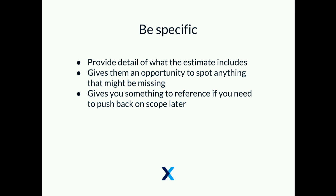The next principle I try to follow is to be really specific — tell them exactly what the estimate includes. That's a way of flushing out what isn't included that they might have thought was included. I picked this up from my partner who has a painting business. Whenever he does an estimate, he lists the specific tasks: prep, two coats, and cleaning. That gives the customer the opportunity to say, 'This wall is going dark to light, so it's going to need three coats.' You have that conversation at the beginning rather than the end. And it does give you something to reference later if the scope starts to spiral.